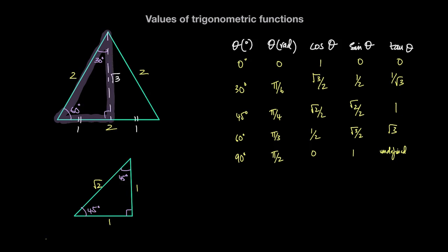Knowing these values, for a right-angle triangle: cosine of 30 degrees, or pi over 6 radians, is the side adjacent to the 30° angle — which is root 3 — divided by the hypotenuse, giving root 3 over 2. The sine of 30° is the side opposite divided by the hypotenuse, so that's 1 over 2. And the tan of 30 degrees, or pi over 6 radians, is the side opposite divided by the side adjacent, which is 1 over root 3.